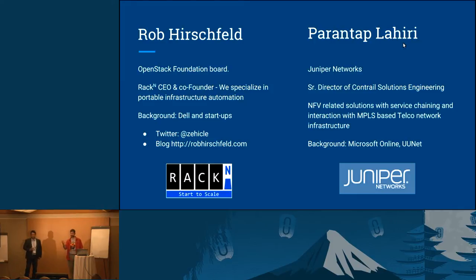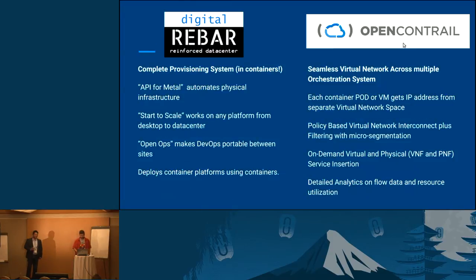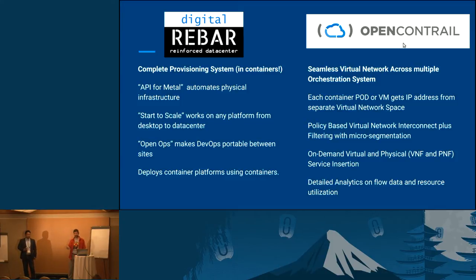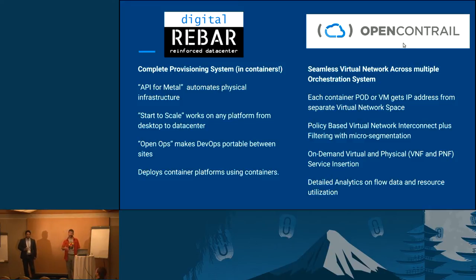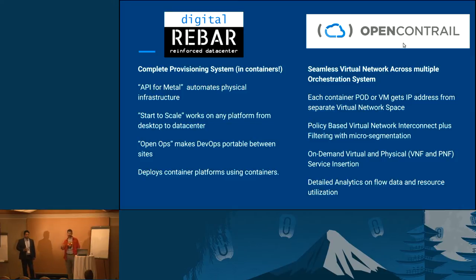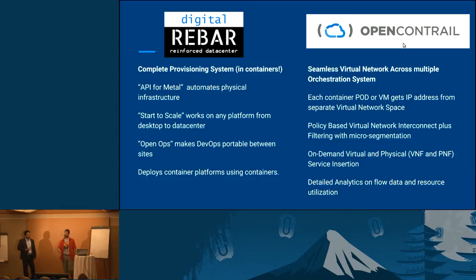We're here to talk about two technology sets that are adjacencies to the OpenStack project. Neither of them are OpenStack projects per se, but they are both in and around the ecosystem quite a bit. One is Digital Rebar, which is the rebranding of the OpenCrowbar project — really V3 of OpenCrowbar. It's providing a complete provisioning system, going all the way from physical infrastructure out of the box, all the way through building a Kubernetes-type infrastructure, and recently we've been changing it to make it so that it can run not just physical but cloud infrastructure also.